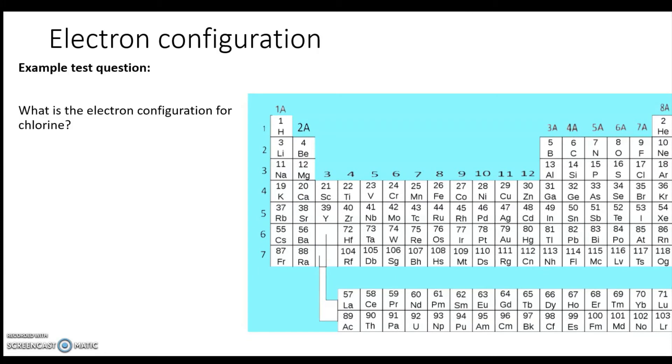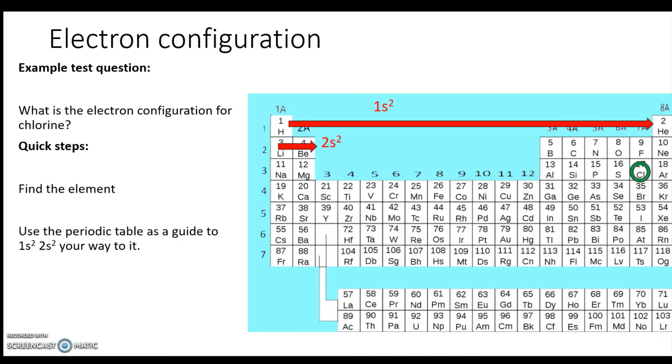The next one is chlorine. And again, we find the chlorine on the table and then just 1s² 2s² our way to it: 1s² 2s² 2p⁶ 3s² and then 3p⁵: one, two, three, four, five. All right, and so the electron configuration is spelled out there, and we also have the shortcut being [Ne] 3s² 3p⁵.